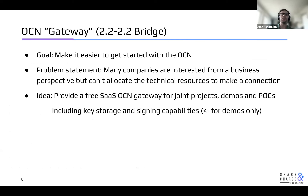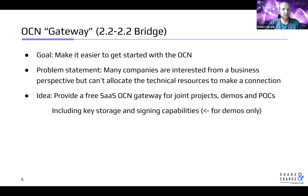The working title and goal of the OCN gateway 2.2 bridge was to make it easier for everybody to connect and get started with the OCN, especially lowering the technical knowledge required for someone to connect, given they already have OCPI 2.2 implemented in their existing backend. It would provide all the additional tasks like signing and the Ethereum keys required to interact with the OCN node, as a bridge or gateway service that Energy Web can host for free for joint projects.